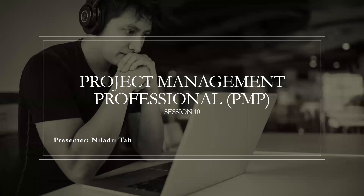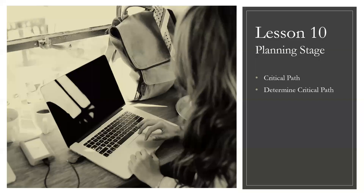Hi, everyone. Welcome to session 10 of the Project Management Professional training series. In session 10, we are going to do a continuation of session nine. In session nine, we went through how to develop the schedule — the process of activities and durations, placing activities in sequence and in parallel, and finding the float of activities with the help of the forward pass and the backward pass. Now, one important step left in the network diagram is finding a very important component called the critical path.